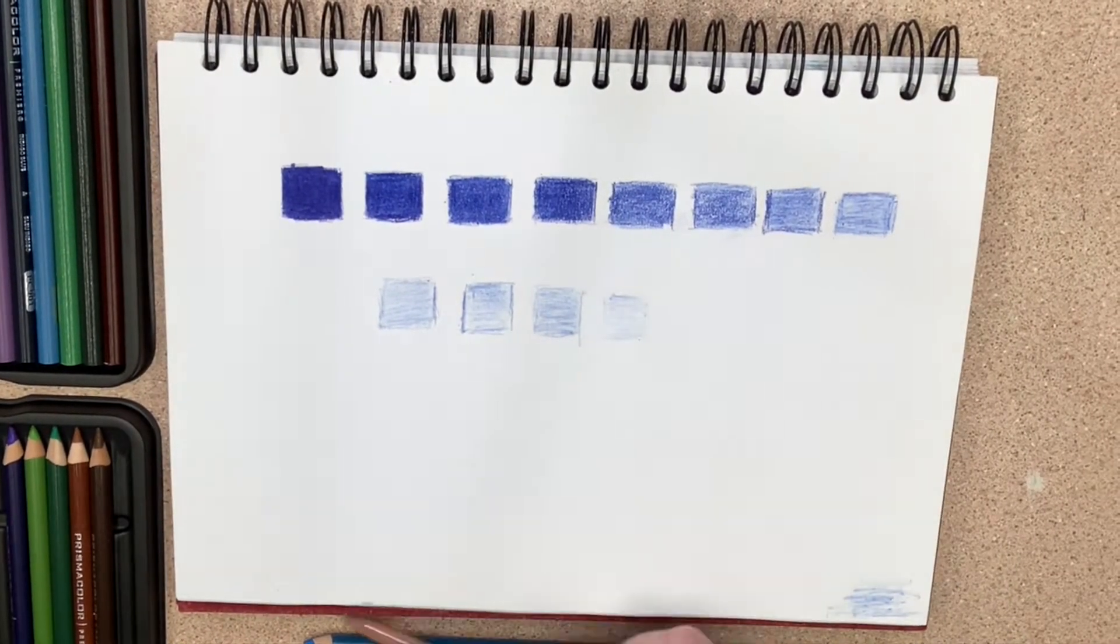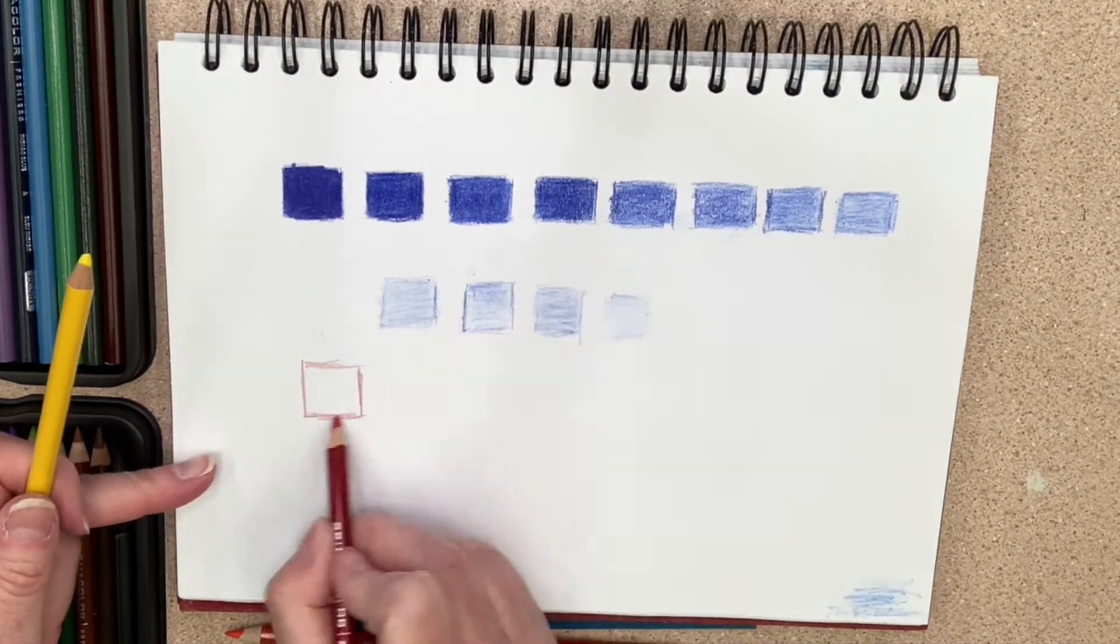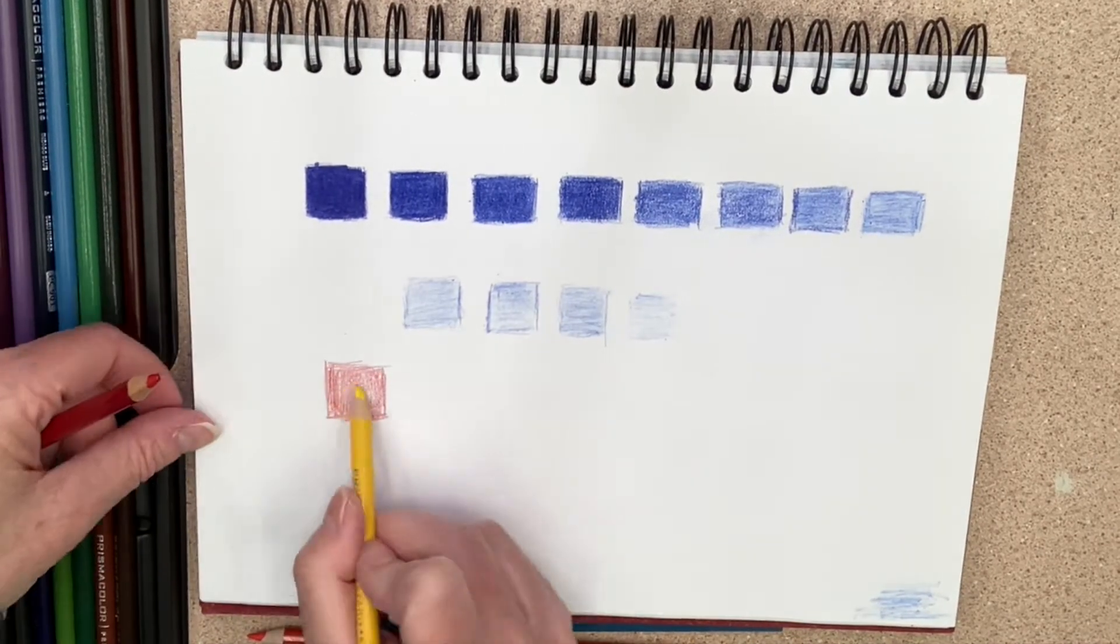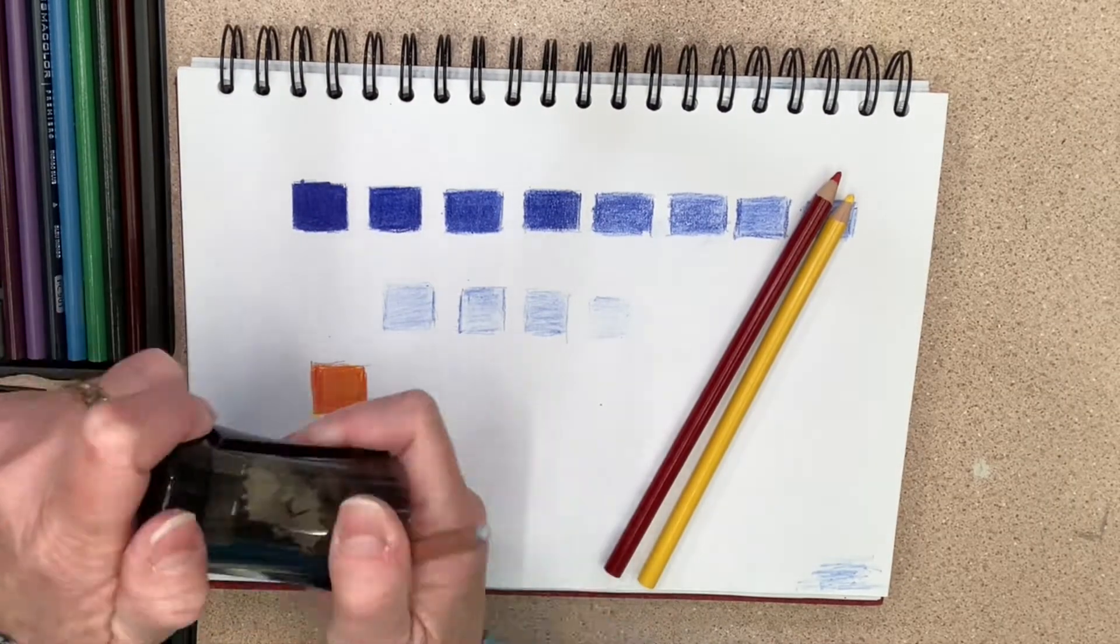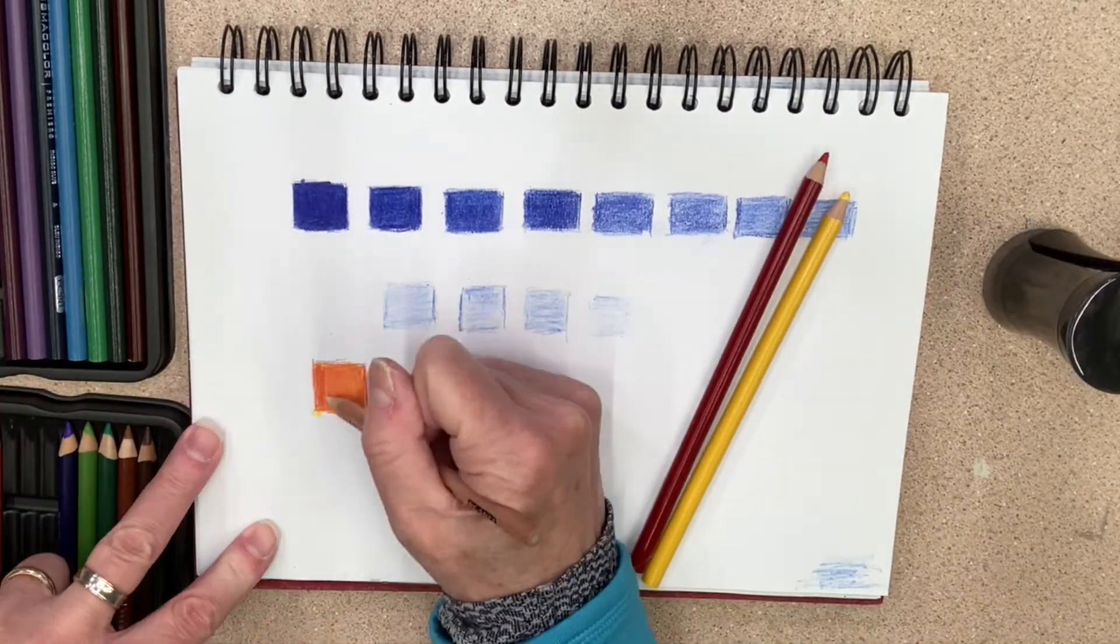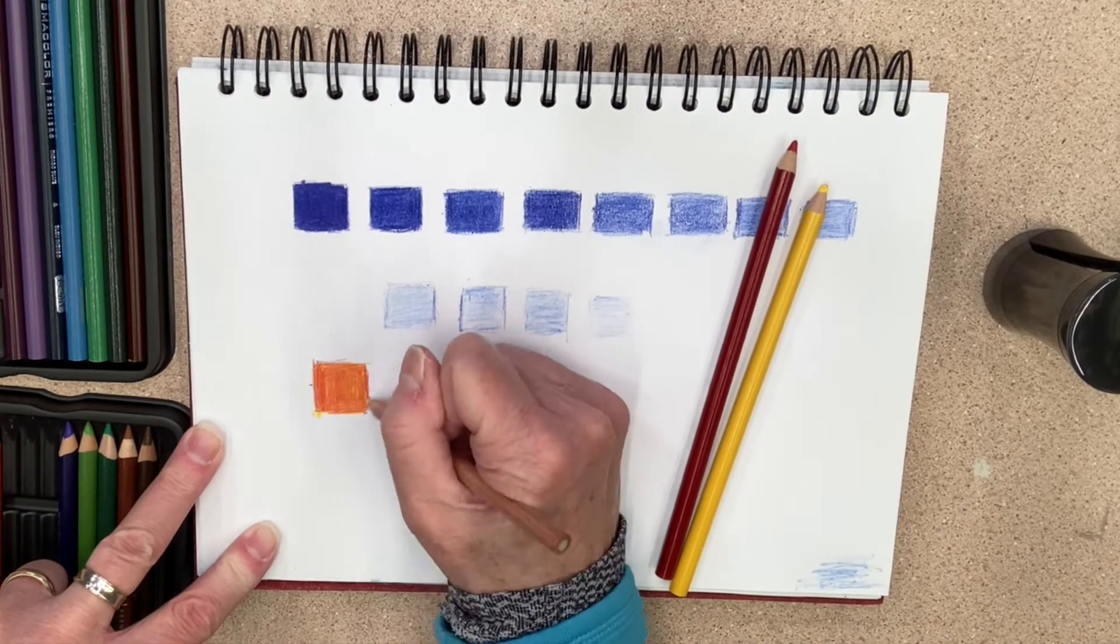I'm using the crimson red and then putting the canary yellow over just to show you how you can mix colors. And look at there, I created orange. And I'm using the Prismacolor sharpener to get the color off the blender, which also works.